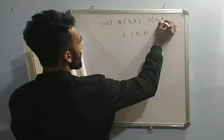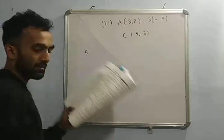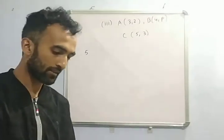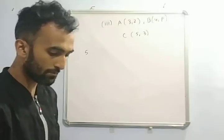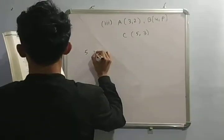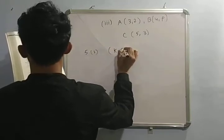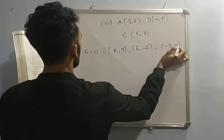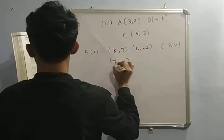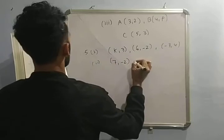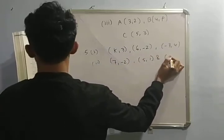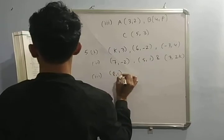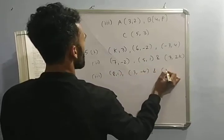Find out the value of P for which they are collinear. And question number 5: find the value of K if the points are collinear — same concept. Sub number 1: K comma 3; 6 comma minus 2; and minus 3 comma 4. Next is 7 comma minus 2. Sub number 2: 5 comma 1 and 3 comma 2K. Sub number 3: 8 comma 1; 3 comma minus 4; and 2 comma K.